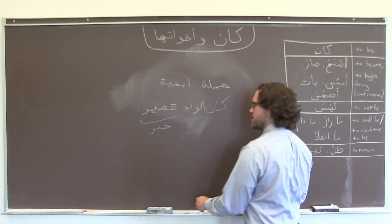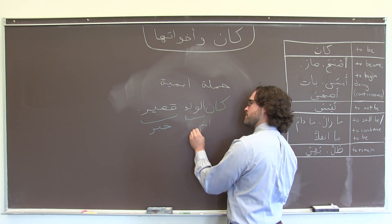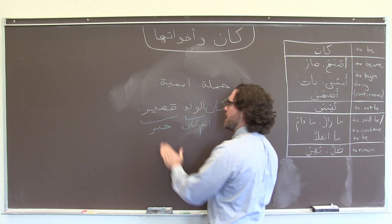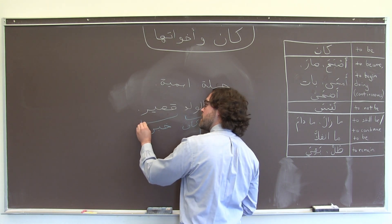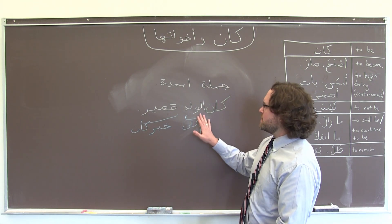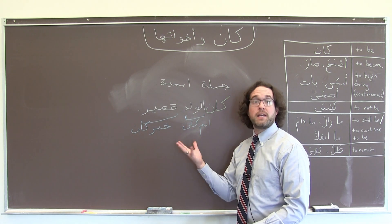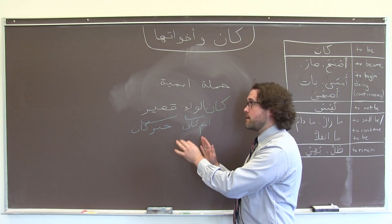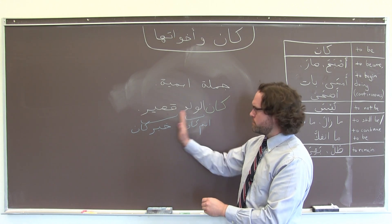الولد is now called اسم كان. Sort of like the noun of كان. And then قصير, the end, the predicate, is specifically called خبر كان. So in terms of what we've done with sentence structure, not really much has changed, but in Arabic we need to know to refer to it by a second set of forms. The other thing that, excuse me, a second set of terminologies, right? But the form stays pretty much the same.